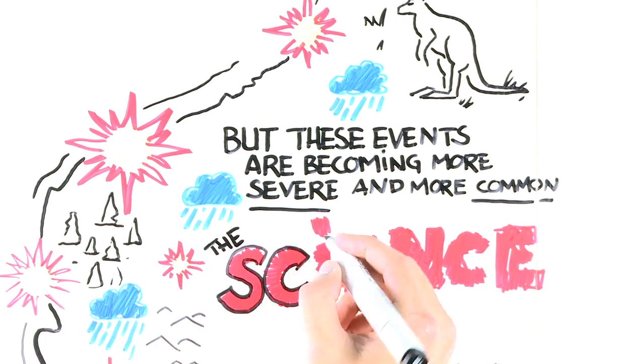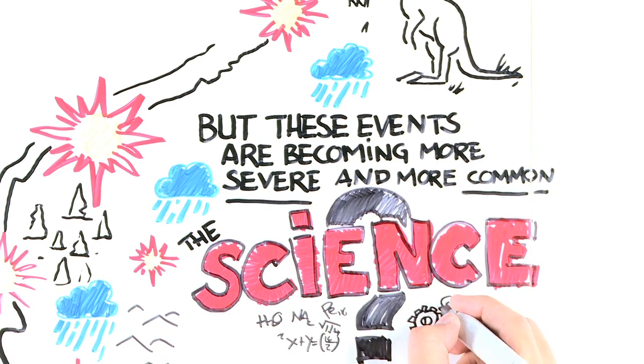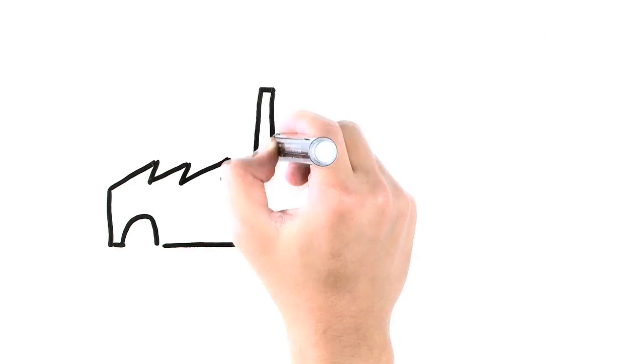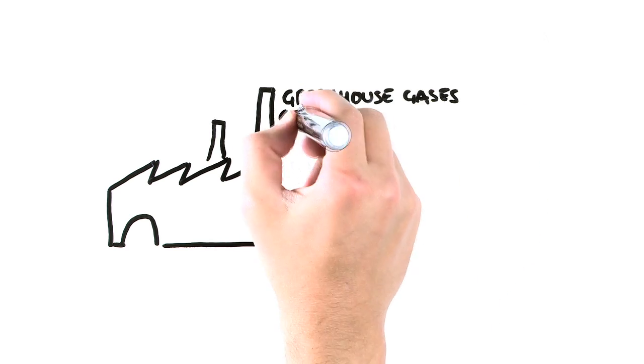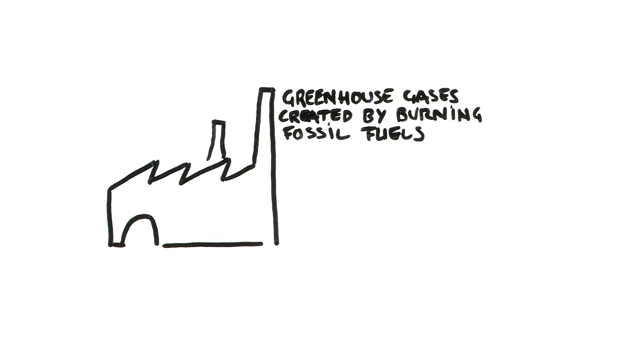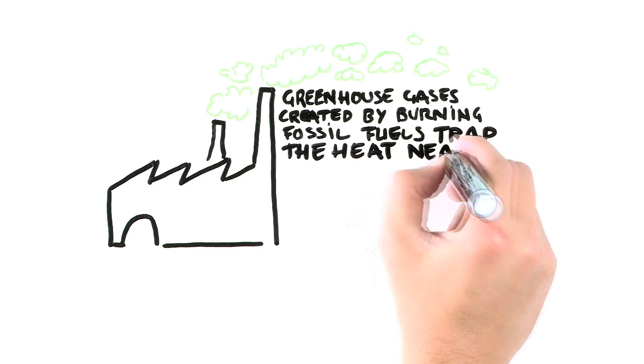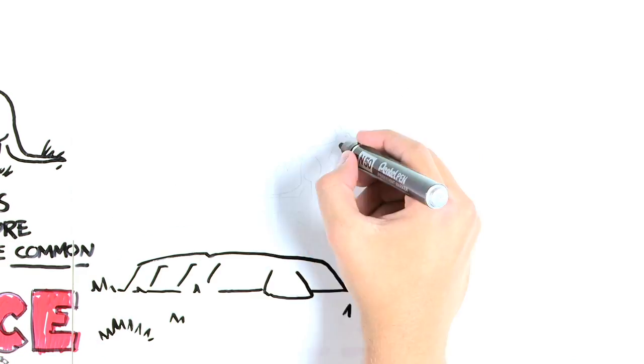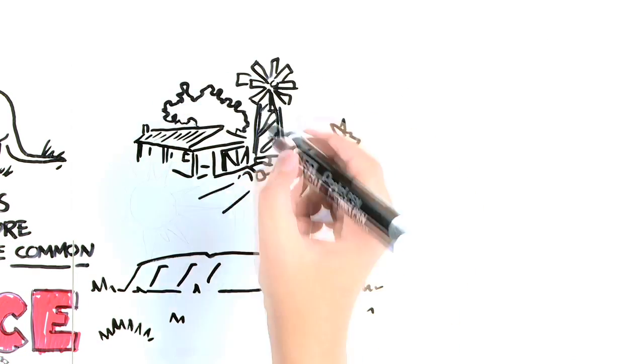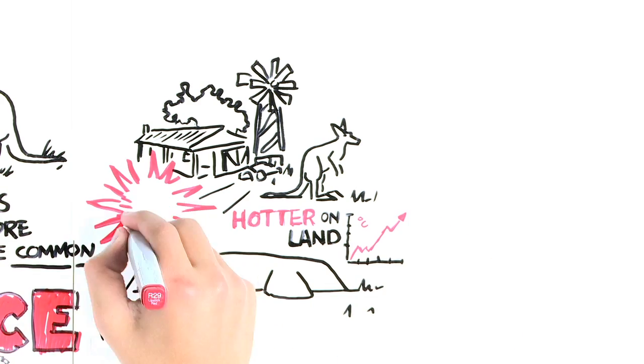So what's the science behind all this? Let's start with greenhouse gases. As you probably know, these are released when we do things like burn fossil fuels. When this happens, heat becomes trapped near the Earth's surface, making it hotter here on land and in the ocean.